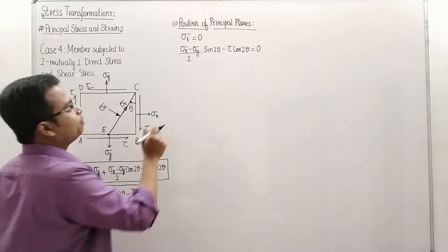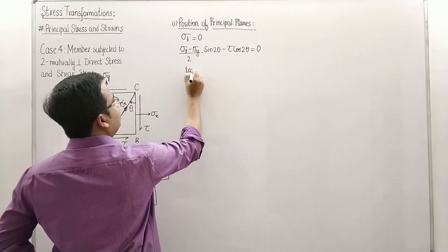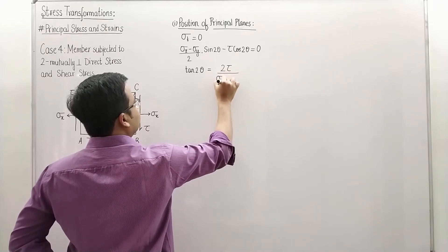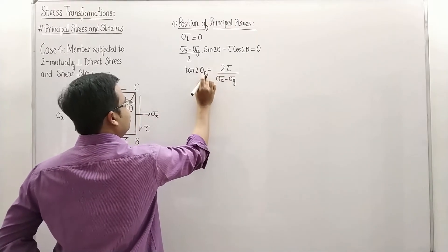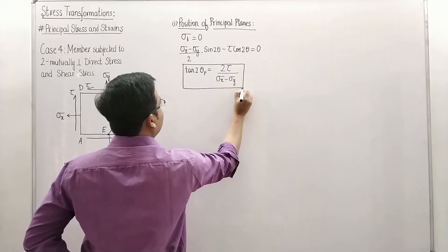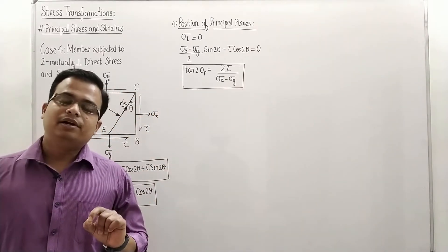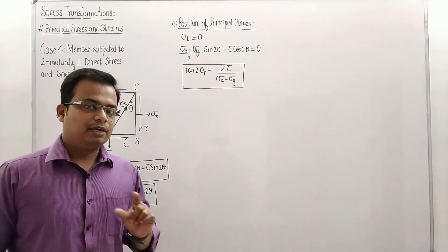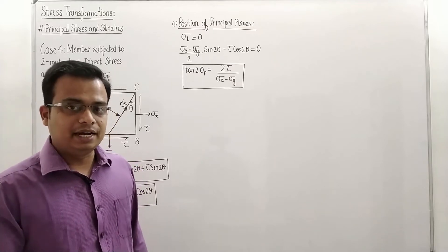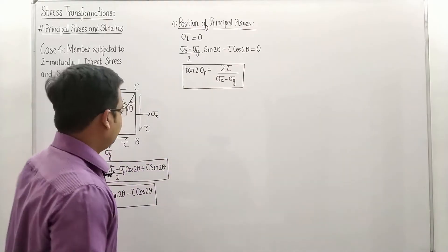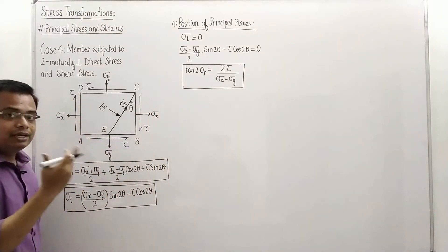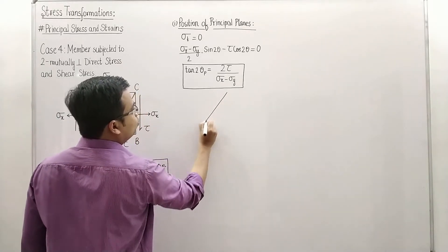If we put sigma t equal to zero and do the math, this works out as: tan 2 theta p = 2 tau / (sigma x minus sigma y). This is an extremely important result. We write subscript p for principal planes. There are going to be two values of theta p. For this value of theta we want to calculate the maximum and minimum values of normal stress — the major and minor principal stresses.